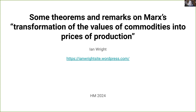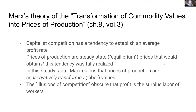Some theorems and remarks on Marx's transformation of the values of commodities into prices of production. Marx's theory: capitalist competition has a tendency to establish an average profit rate. The prices of production are those steady-state or equilibrium prices that would obtain if this tendency was fully realized. In this steady state, Marx claims that prices of production are conservatively transformed values.